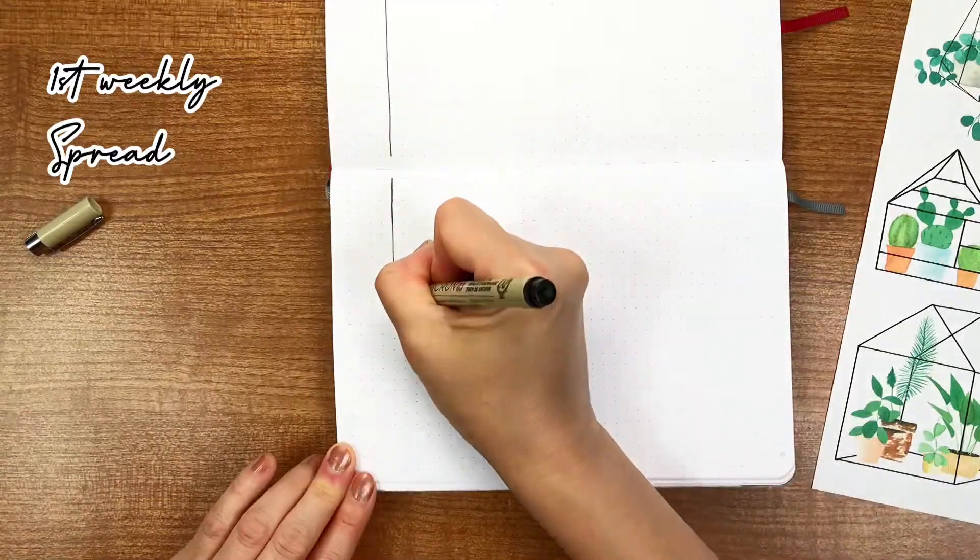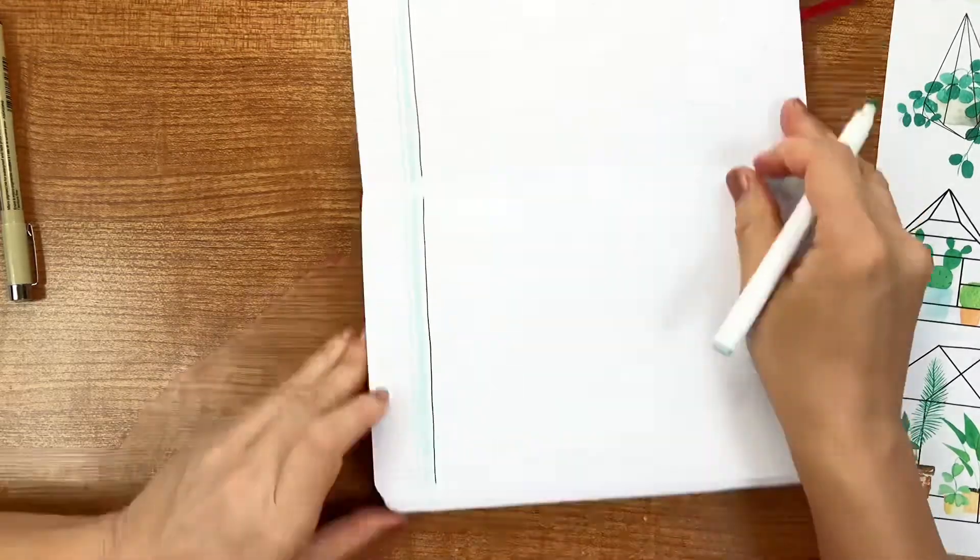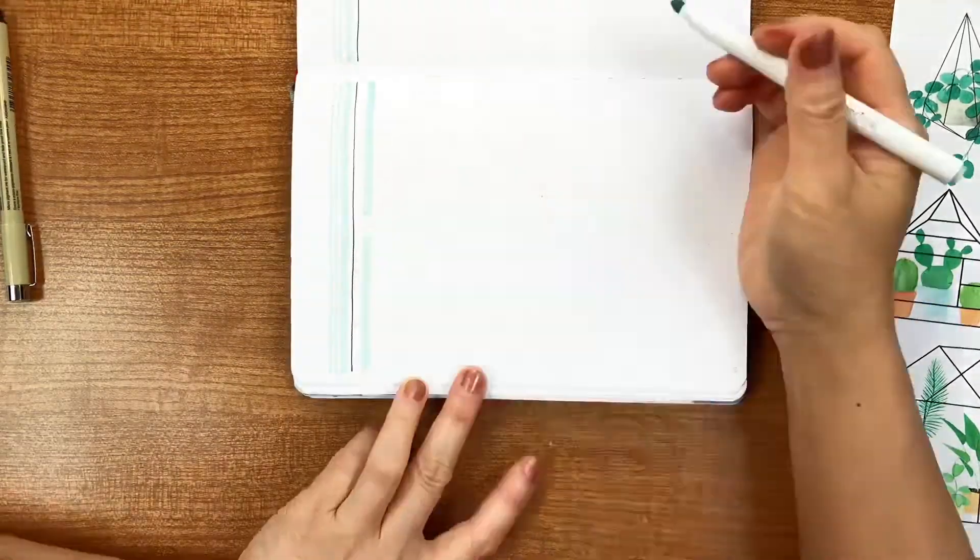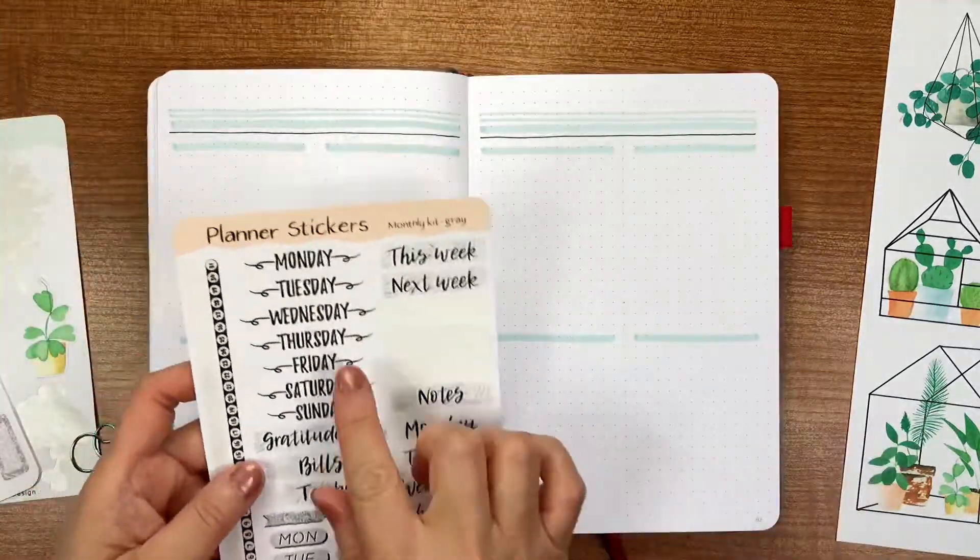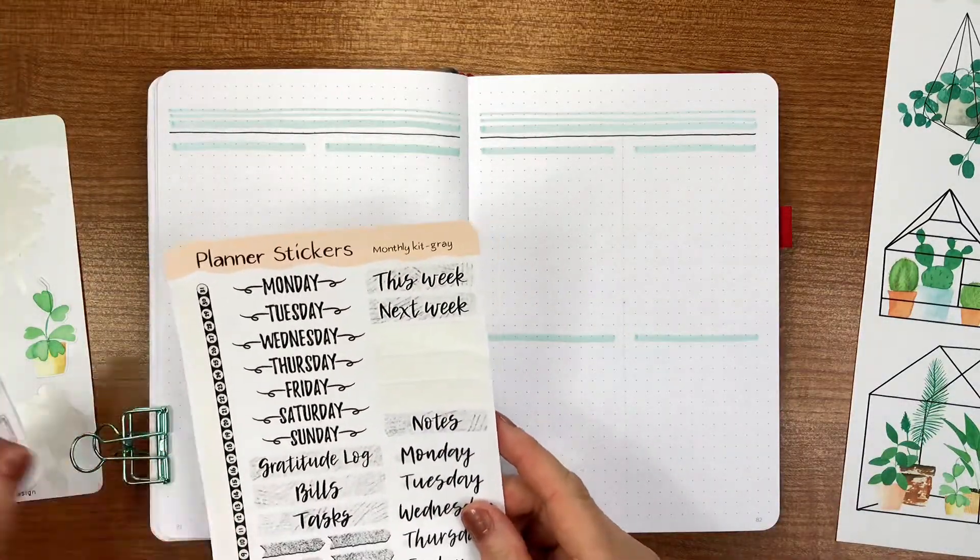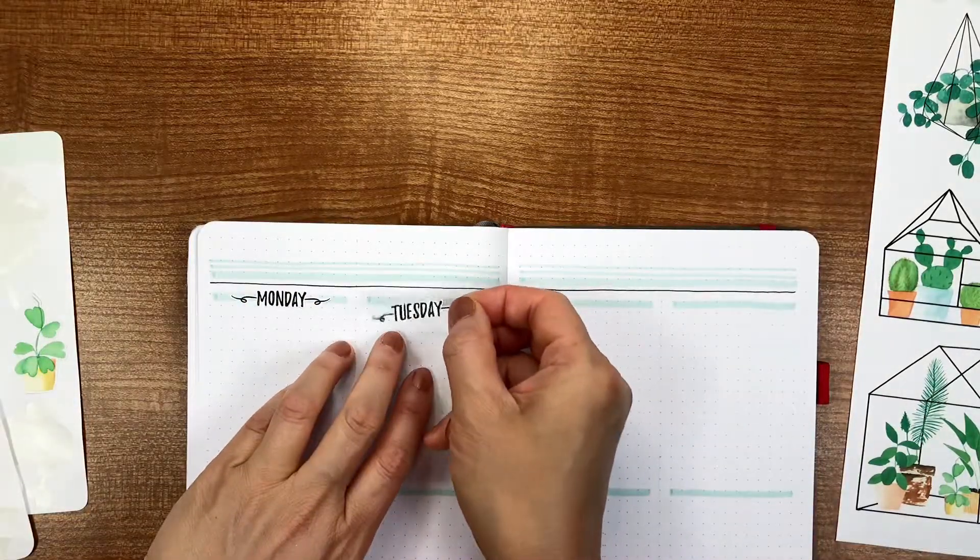Here I'm designing my first weekly spread. I really like this layout because there are plenty of spaces to write down for each day. I'm using my gray colored planner stickers to add the days of the week onto this spread.